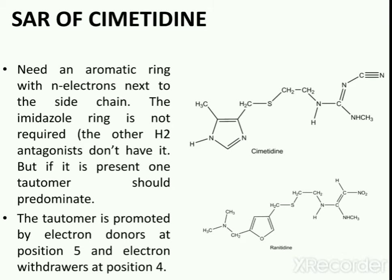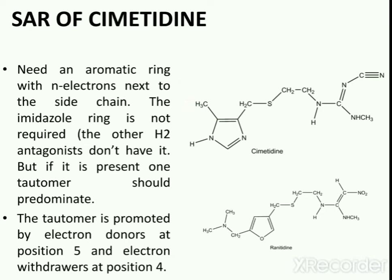However, if the imidazole ring system is present, only one tautomer should predominate. This tautomer is promoted by electron donors at position 5 — for example, the SCH3 group at position 5 is an electron donor group — and by electron-withdrawing groups at position 4.